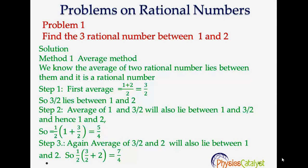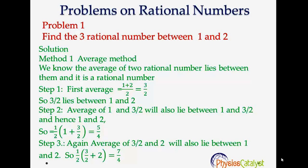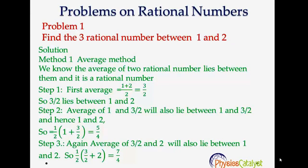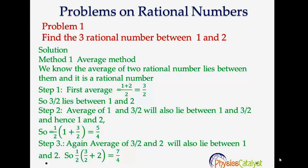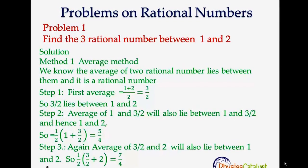Again, the average of 3/2 and 2 will also lie between 1 and 2. So calculating the average, we get 7/4. So 7/4 will also lie between 1 and 2. So the three numbers are 7/4, 5/4, and 3/2.